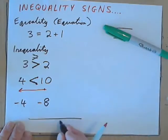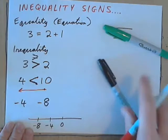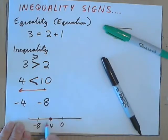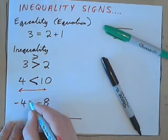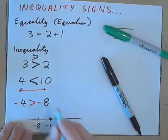Now if you think about a number line, here's 0, here's negative 4, here's negative 8. Negative 4 is to the right of this number, isn't it? On a number line. So this is greater. So negative 4 is greater than negative 8.